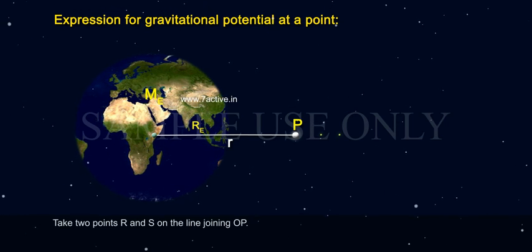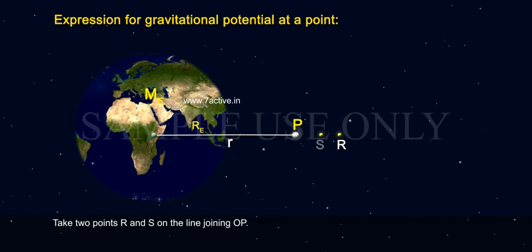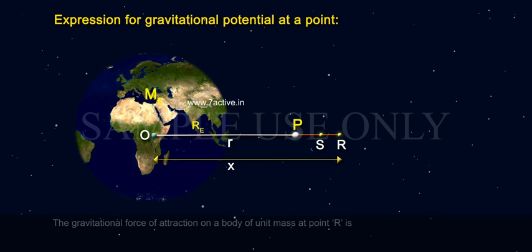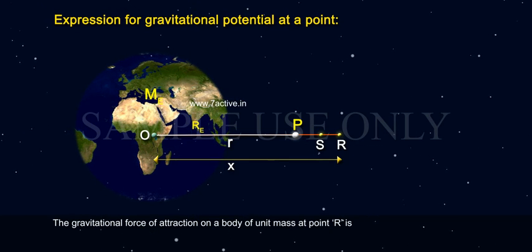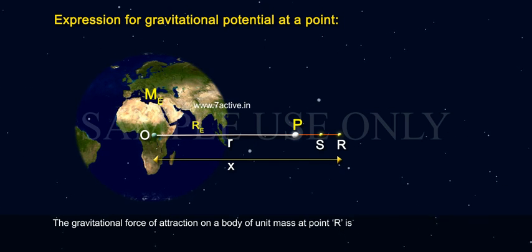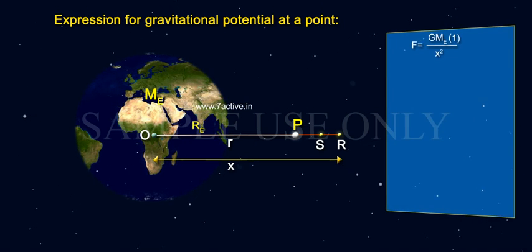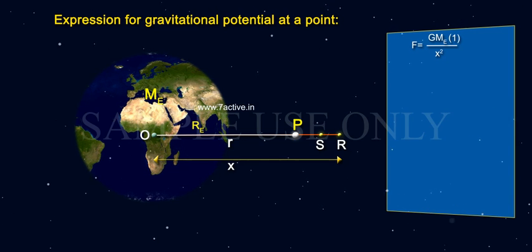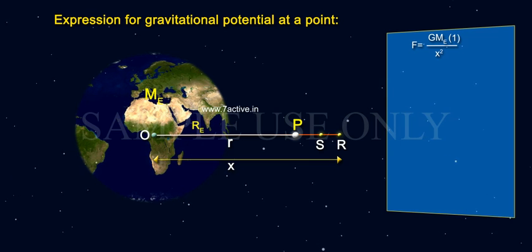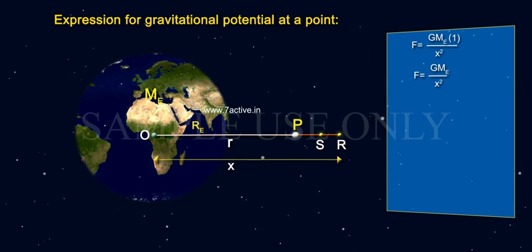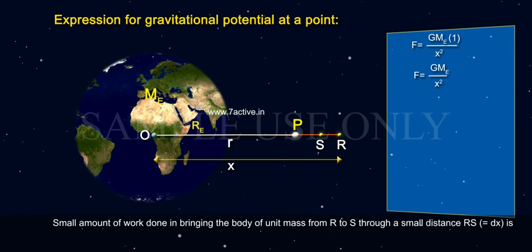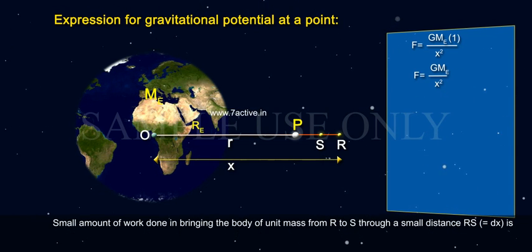Take two points R and S on the line joining OP. The gravitational force of attraction on a body of unit mass at point R is F equals GMₑ into 1 by x squared, that is F equals GMₑ by x squared.